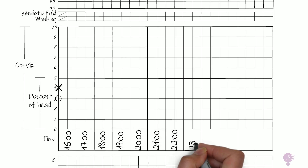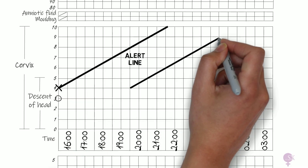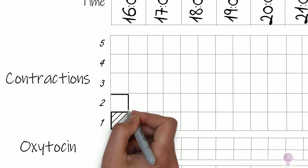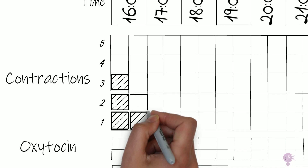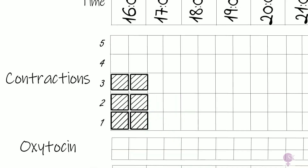With a cross we note the cervical dilatation at 4 cm, and with a circle the descent of the fetal head at 3 fifths palpable. We write out all the corresponding times and draw the alert line and action line, starting at 4 cm dilated, covering 1 cm per hour, with the action line having the same gradient but a 4-hour lag. For contractions, we use boxes with diagonal lines to indicate contractions lasting 20 to 40 seconds, and 3 boxes to represent 3 contractions in 10 minutes.